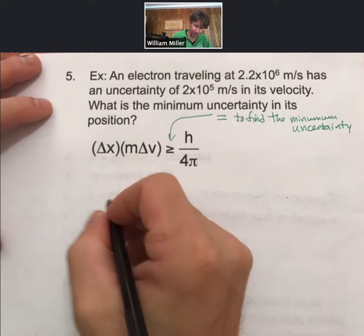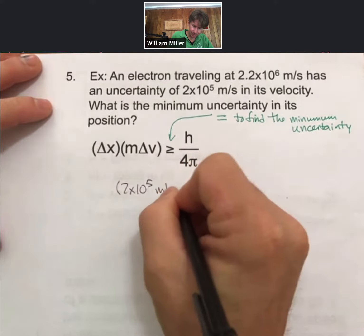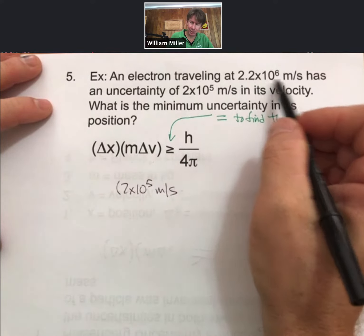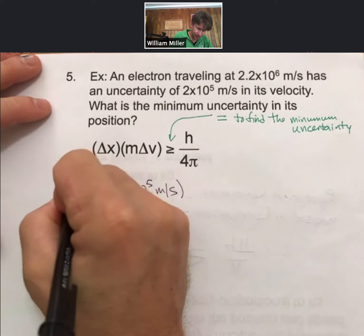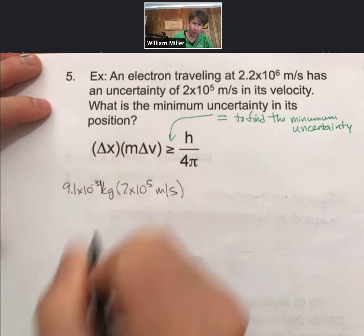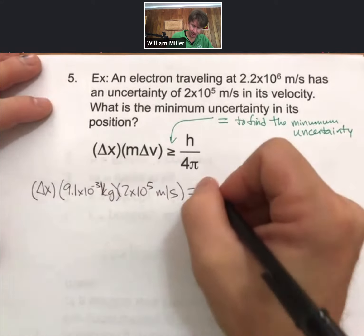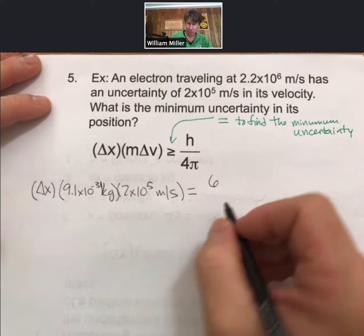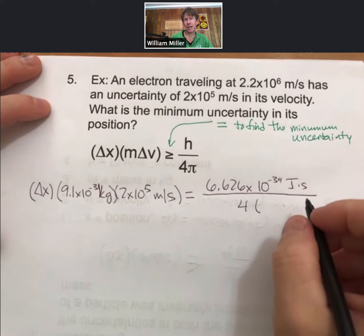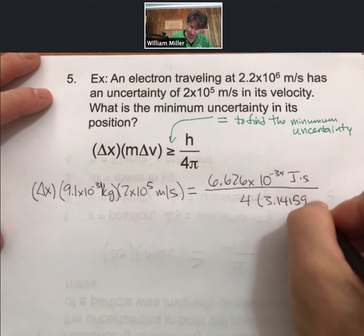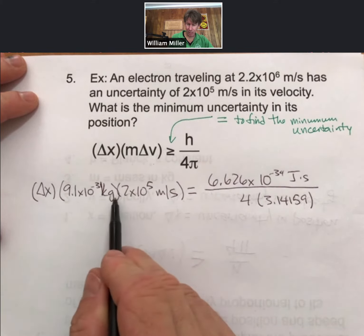Let's plug in the numbers. Delta v is 2 times 10 to the 5 meters per second, which is about 10% of the velocity. The mass of an electron is 9.1 times 10 to the minus 31 kilograms. Delta x is what we don't know. It equals Planck's constant — 6.626 times 10 to the minus 34 joule-seconds — divided by 4 times pi, times m times delta v.